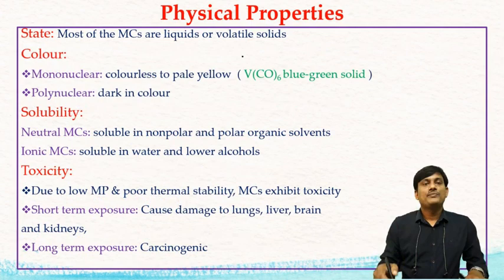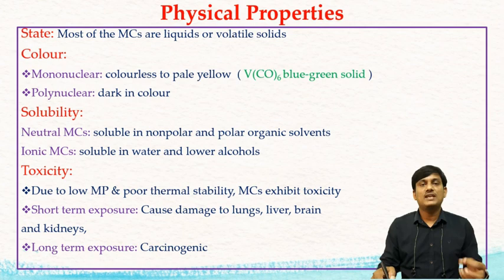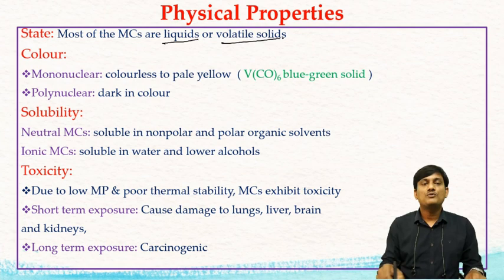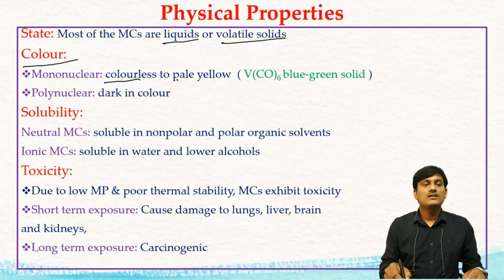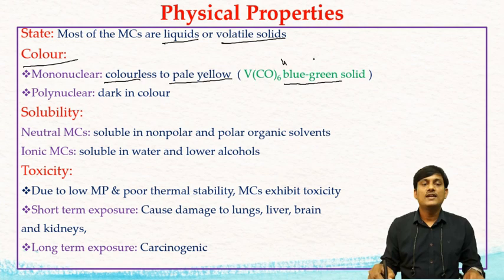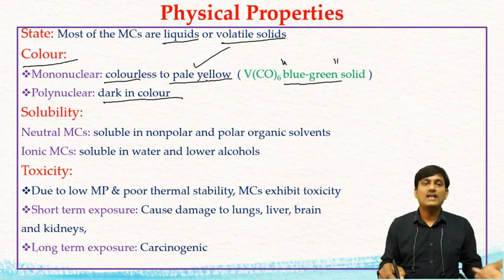What are the physical properties of metal carbonyls? Regarding physical state, most metal carbonyls are liquids or volatile solids. Regarding color, mononuclear metal carbonyls are generally colorless, sometimes pale yellow — colorless to pale yellow. There is an exception: V(CO)₆ has a blue-green color; it is a blue-green solid. Polynuclear metal carbonyls are dark in color, while mononuclear ones are pale or colorless.